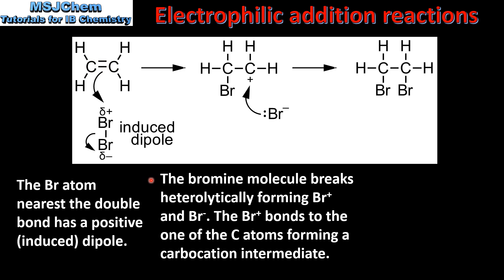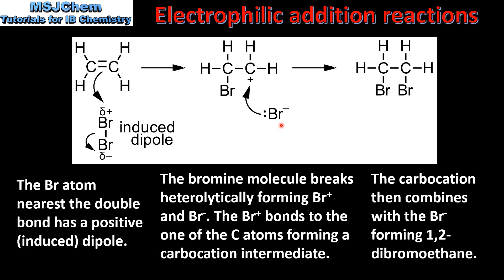The bromine molecule breaks heterolytically, forming the bromonium ion and the bromide ion. The bromonium ion bonds to one of the carbon atoms, forming a carbocation intermediate. The carbocation then combines with a negative bromide ion, forming 1,2-dibromoethane.